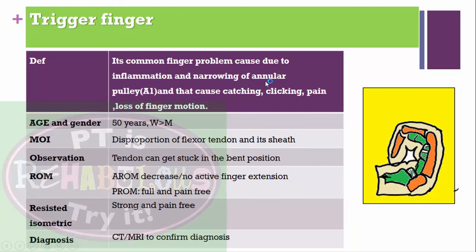Trigger finger: caused by inflammation and narrowing of the annular pulley, causing catching, clicking, pain, and loss of finger motion. More common in women and in the age of 50 years. Mechanism involves disproportion of the flexor tendon and its sheath; mostly affects diabetic patients. On observation, the finger is stuck in flexion. Active range of motion may show decreased or no active finger extension. Passive range of motion is full and pain-free. Isometrics are strong and pain-free. Confirmed by MRI or CT scan.